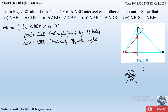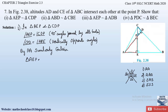Two triangles can be similar if two angles of the two triangles are equal — that is the angle-angle (AA) similarity criteria. We also have AAA similarity, SAS similarity where the ratio of corresponding sides and included angle are equal, and SSS similarity where all three sides are in equal proportion. Since two angles of triangle AEP are equal to corresponding angles of triangle CDP, by the angle-angle similarity criteria, triangle AEP is similar to triangle CDP.